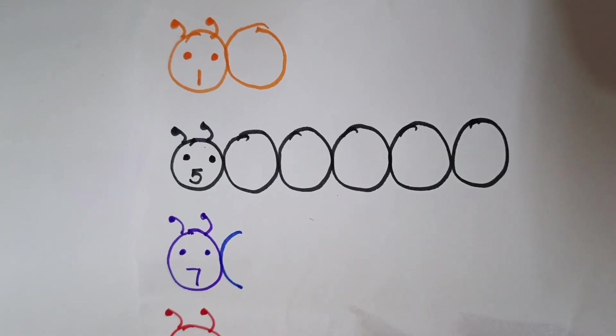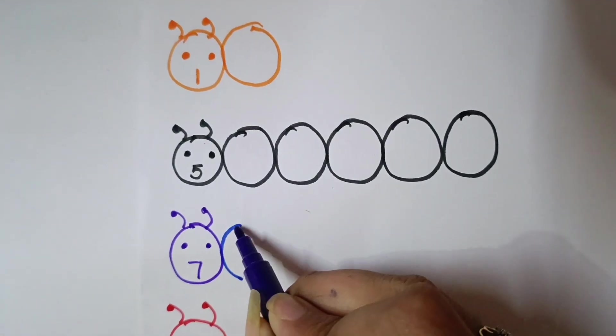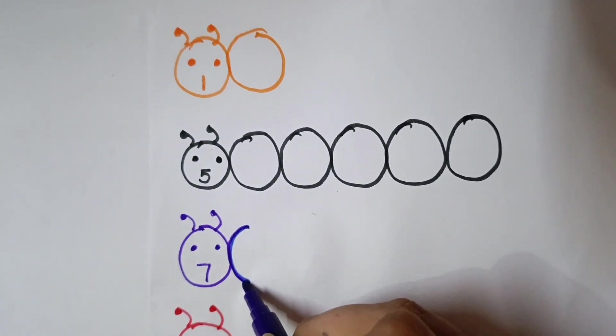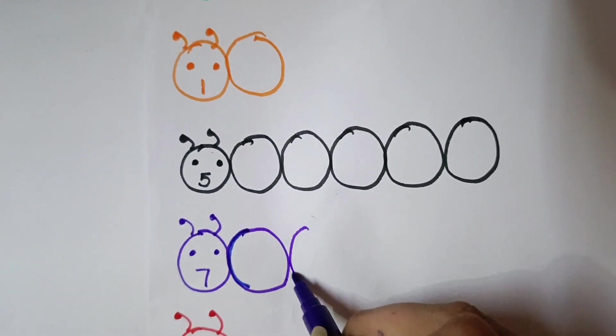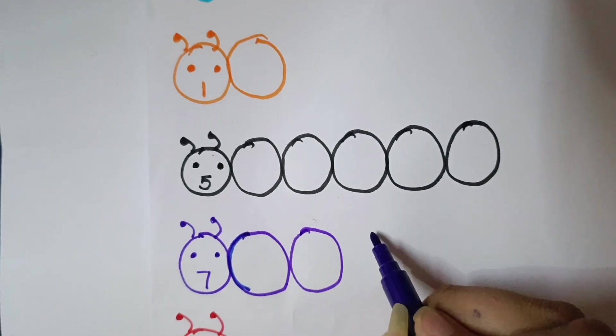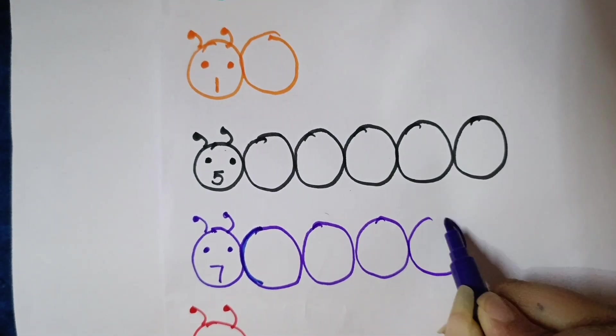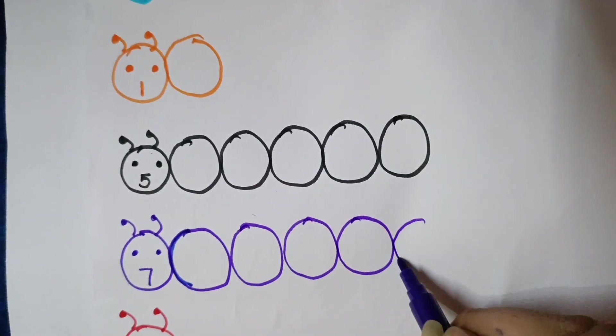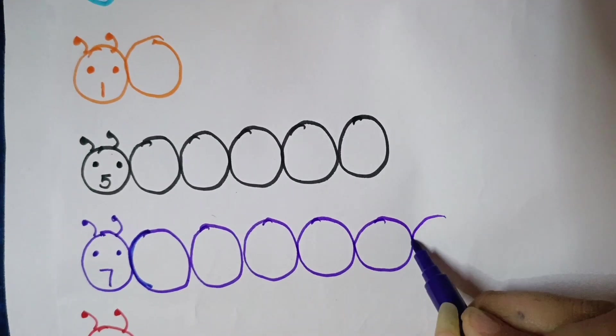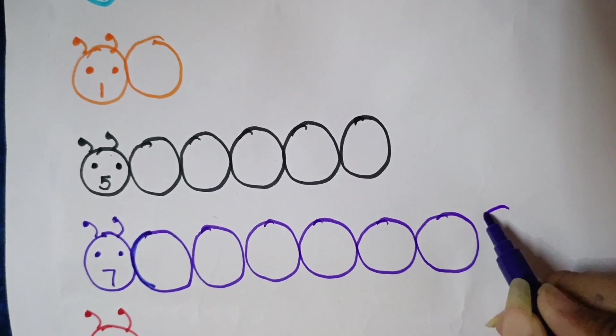Next is 7. So, we will draw here 7 circles. 1, 2, 3, 4, 5, 6 and 7.